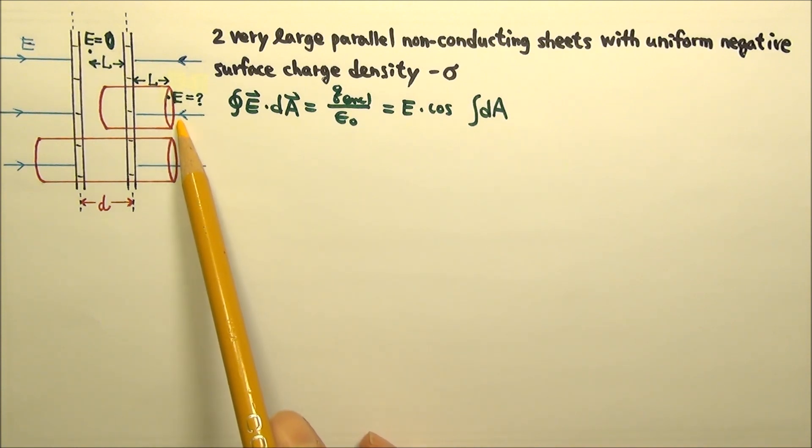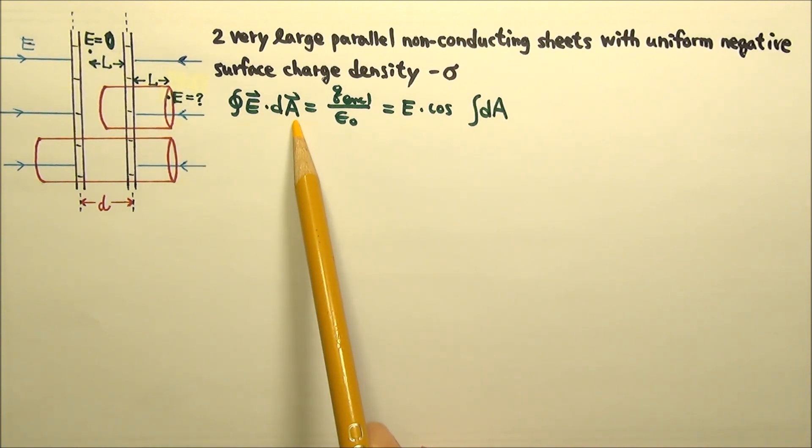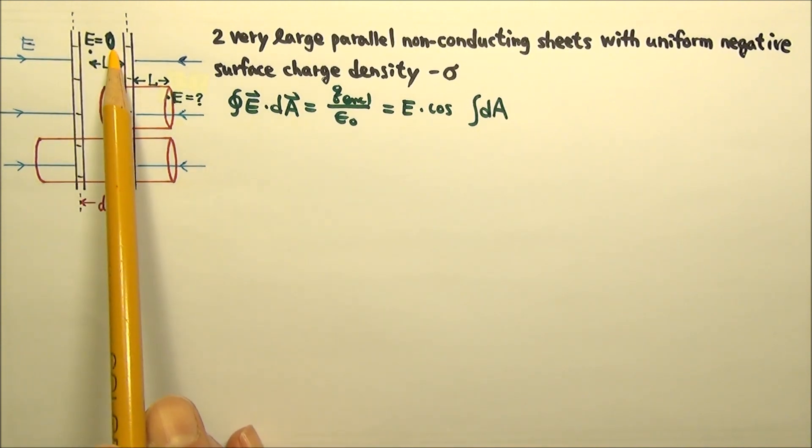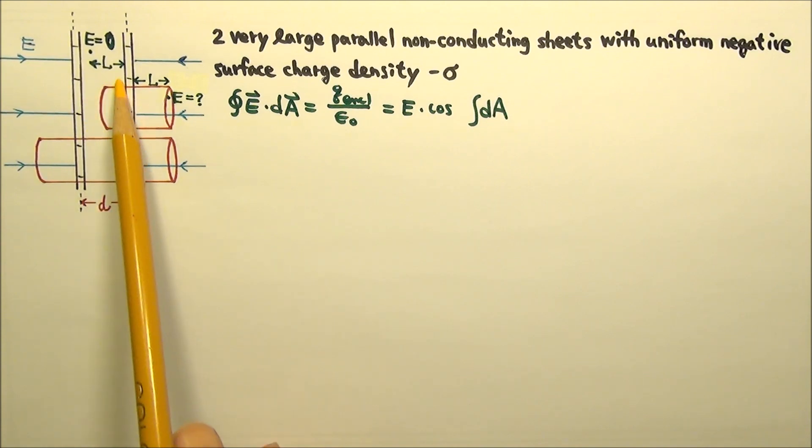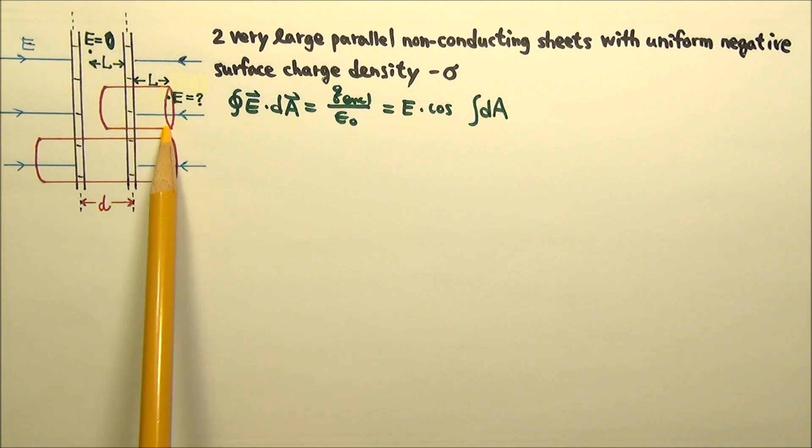Which part of this Gaussian surface has non-zero flux? There is no electric field, so no electric flux between the two sheets.